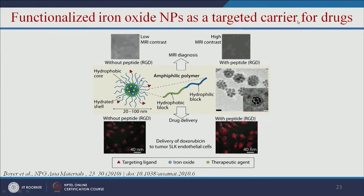We can also use functionalized iron oxide nanoparticles as targeted carriers for drugs. RGD — arginine, glycine, and aspartate — amino acid peptides can be attached to the nanoparticle. This three-amino-acid peptide enhances cell attachment. Without the RGD peptide, cell attachment is less, but with the RGD peptide, cell attachment is greater and gives a stronger signal.